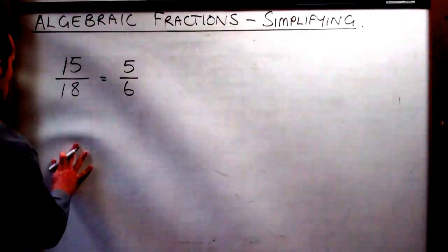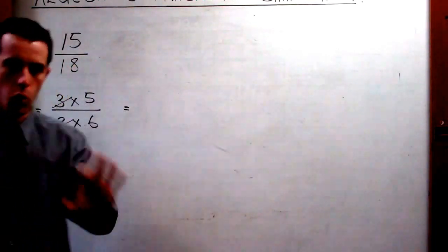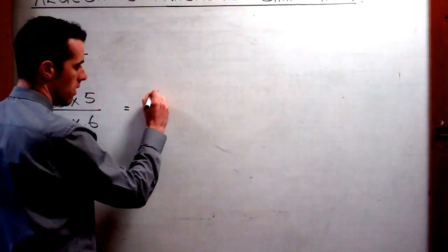There's another way we can think about this. If we split up 15 into factors and do the same with 18: 3 times 5 gives us 15, and 3 times 6 gives us 18. We've taken 15 and split it into factors — 3 times 5 — and 18 into 3 times 6. Because 3 over 3 is 1, if we have the same thing in the numerator and denominator, we can cancel those out. So we're just left with 5 over 6.